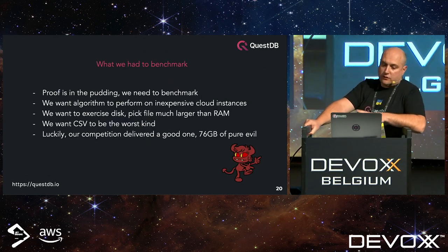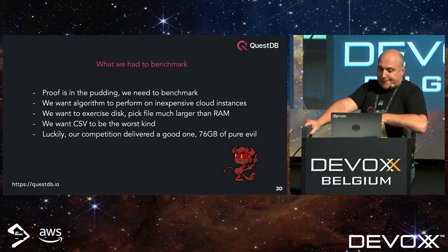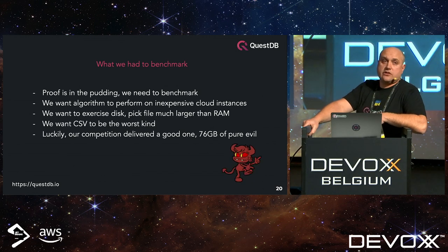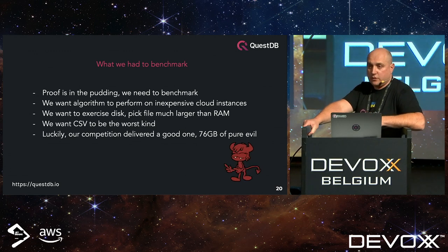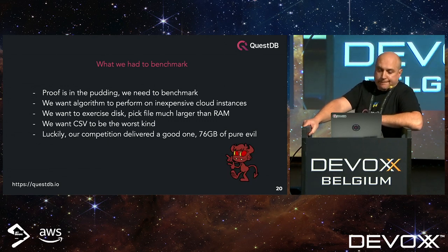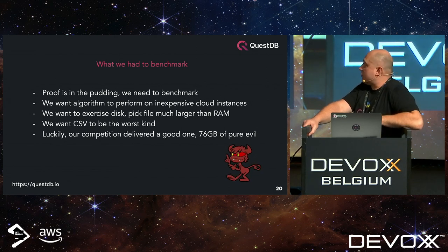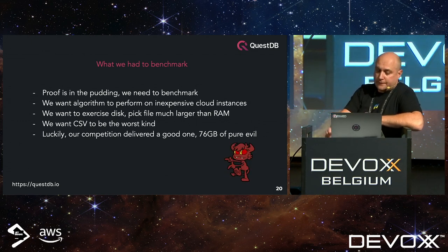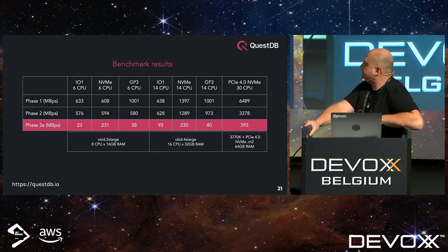After putting this all together, we had to benchmark and see if this approach makes sense and improves user experience. We wanted to perform on very inexpensive boxes — no massive machine with huge RAM. The test file is larger than RAM by a long margin, and we wanted the CSV to be the worst kind in terms of randomness. One of our competitors actually delivered a perfect test file: 76 gigabytes, pure evil — not a single line is together, everything totally random.